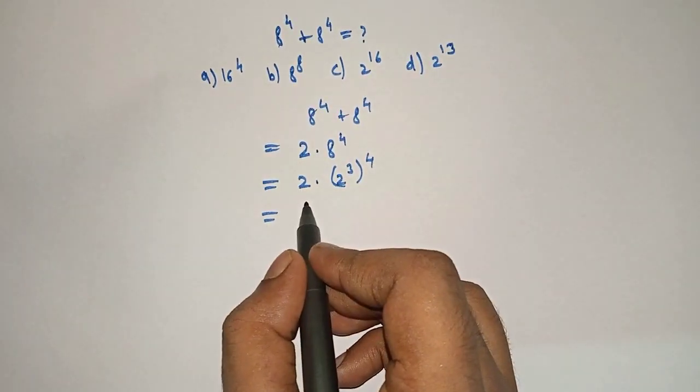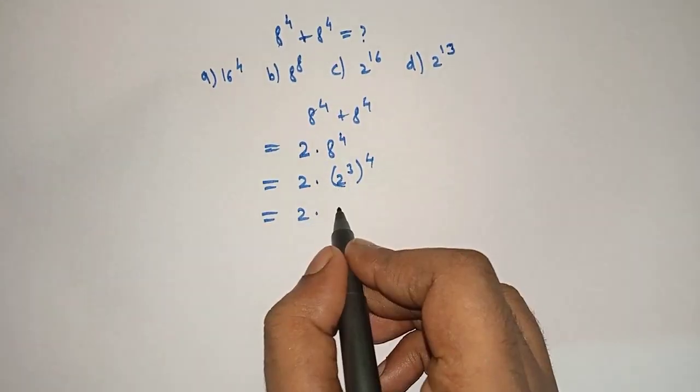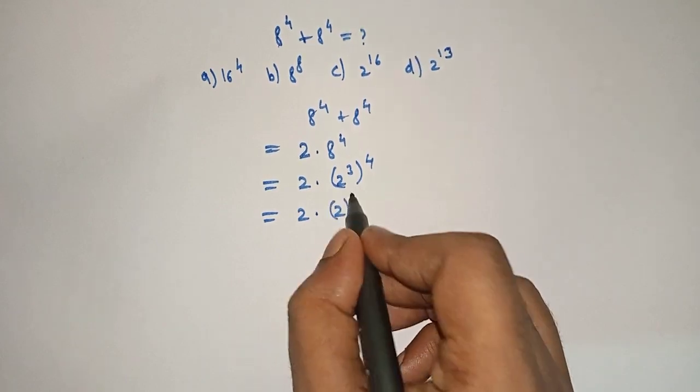Now, it can be written as 2 into 2 raised to 12.